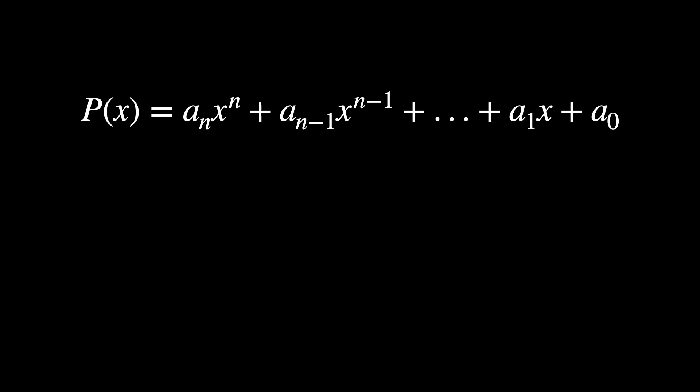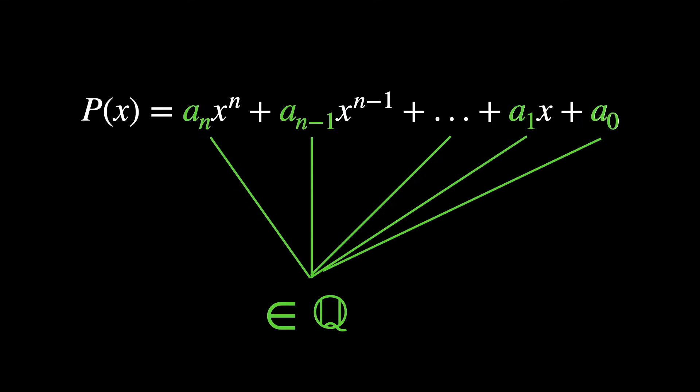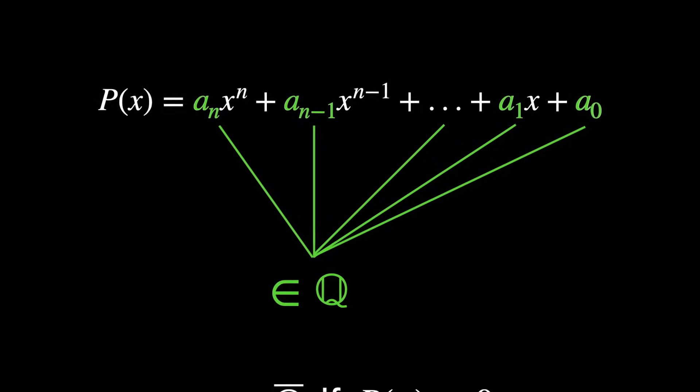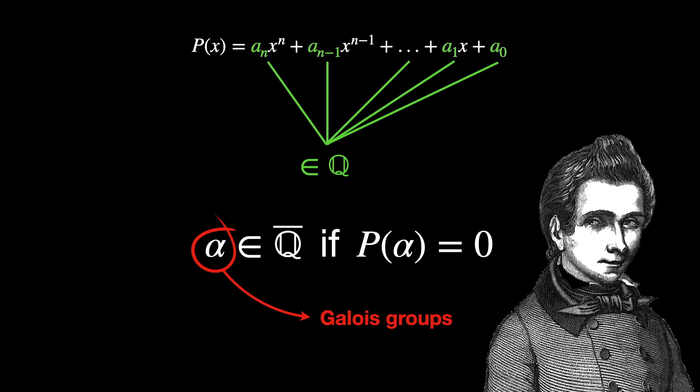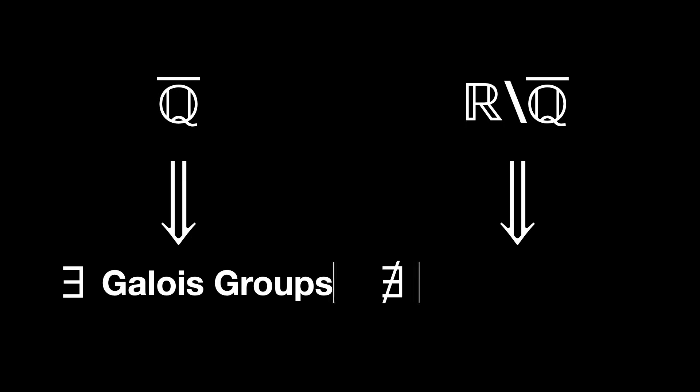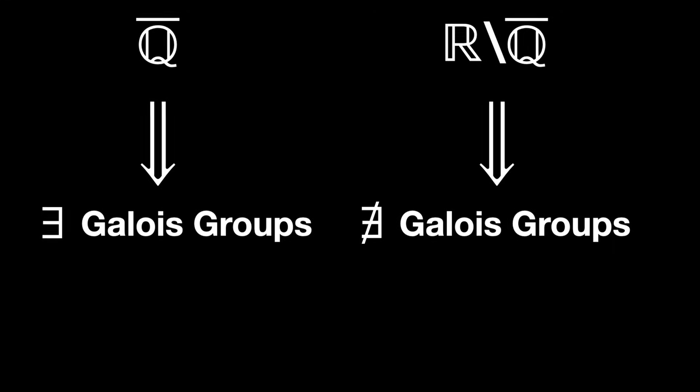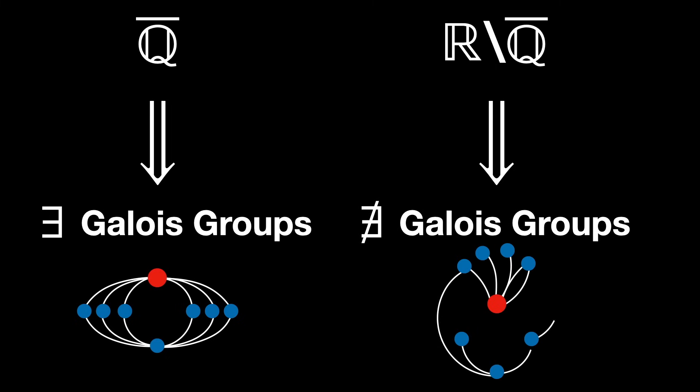The best way to see the rarity of algebraic numbers, as well as the difficulty in finding concrete examples of transcendental numbers even though they compose the vast majority of real numbers, can be appreciated through the lens of group theory and Galois theory. An algebraic number is a solution, or root, of a non-zero polynomial with integer or rational coefficients. These numbers are associated with Galois groups, which capture the symmetries of the roots of polynomials. Algebraic numbers have a finite and well-defined structure based on their group structure. Transcendental numbers do not have any Galois groups associated with them — they lack structure and symmetry.